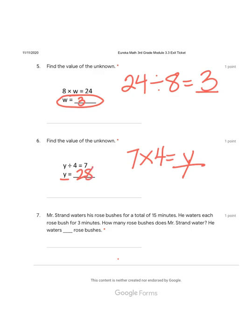And our last problem, number 7. Mr. Strand waters his rose bushes for a total of 15 minutes. He waters each rose bush for 3 minutes. How many rose bushes does Mr. Strand water? He waters blank rose bushes. This is our unknown. How many rose bushes does he water? So what do we know? We know that he waters for 15 minutes total. We know that each bush takes 3 minutes.